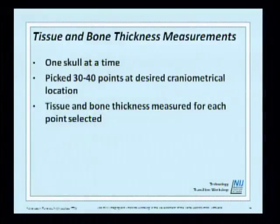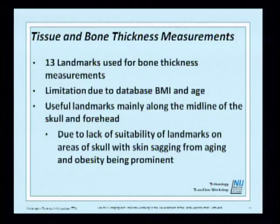For tissue and bone thickness measurements, we processed one skull at a time, picking 30-40 points at desired craniometric locations. Tissue and bone thickness were measured for each selected point. We used these specific points because they are the ones used by the community. The software does not prevent you from picking any point, but if you pick points not in the tables, you have no published data to compare against. We used 13 landmarks for bone thickness measurements, with limitations due to database body mass index and age.